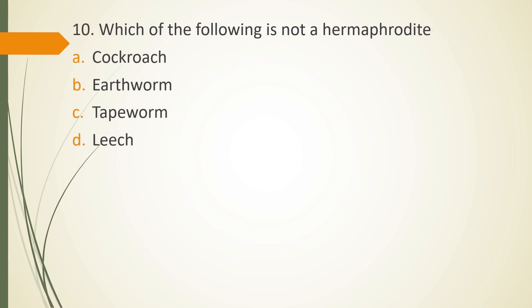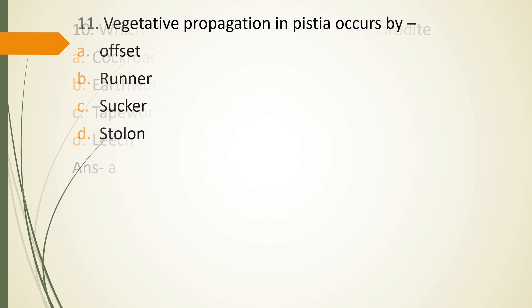Question 10. Which of the following is not a hermaphrodite? Cockroach, earthworm, tapeworm, leech. Correct answer is option A. Cockroach is not a hermaphrodite. And what does a hermaphrodite mean? It means same organism is having both the organs of male and female.